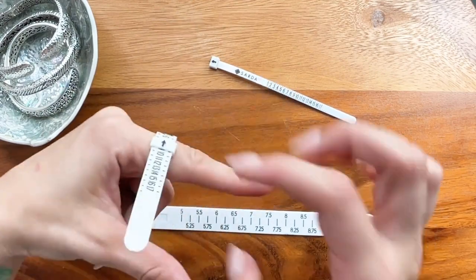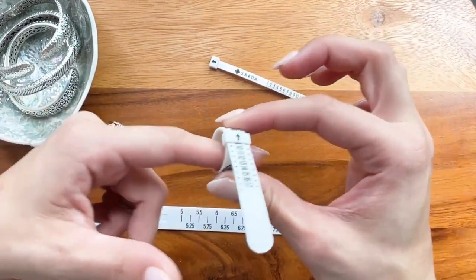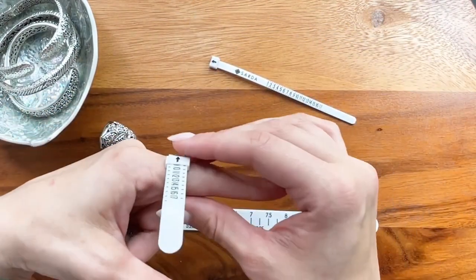You will want to check to make sure you are still able to slide it over the knuckle. You will see I measure a size 7.